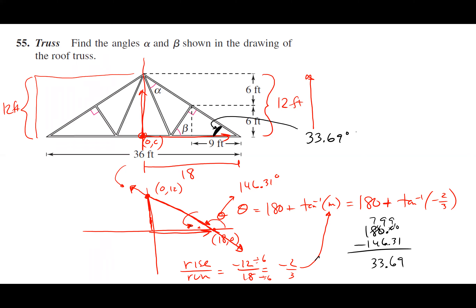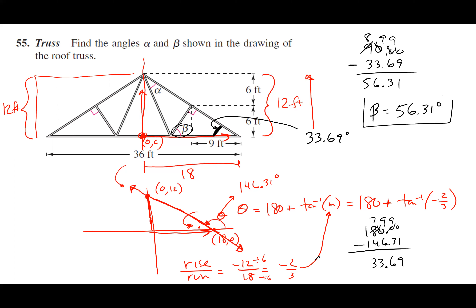But I know some stuff about triangles. If you add all the interior angles of a triangle it's 180 degrees, but this angle here is 90. So since that's 90, all I have to do is figure out 90 minus 33.69. So my beta angle is 56.31 degrees — found it.